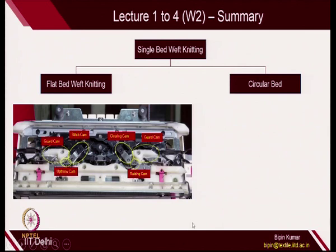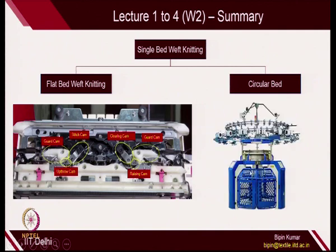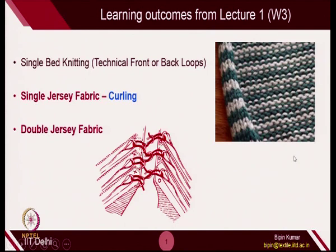We also gave a demo of how the cam track is created on flatbed weft knitting — different cams including raising cam, clearing cam, stitching cam, upthrow cam, and guard cam. In circular bed, we gave more emphasis on multi-feeder machines because of higher productivity. Here, many cams are placed on the periphery of the cylindrical wall, so the needle is always in some knitting function — all needles make multiple loops in one rotation. This is why production on circular bed is very much higher.